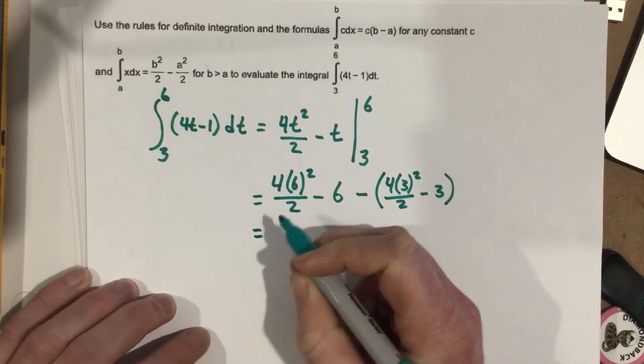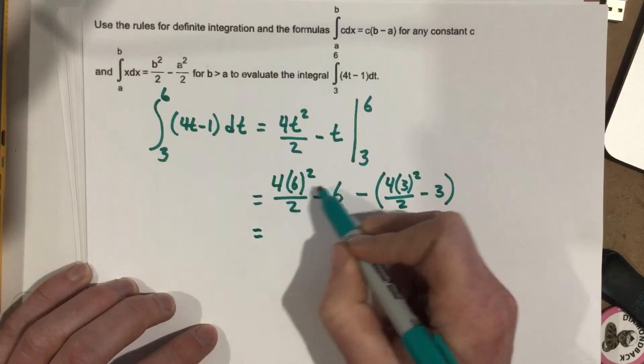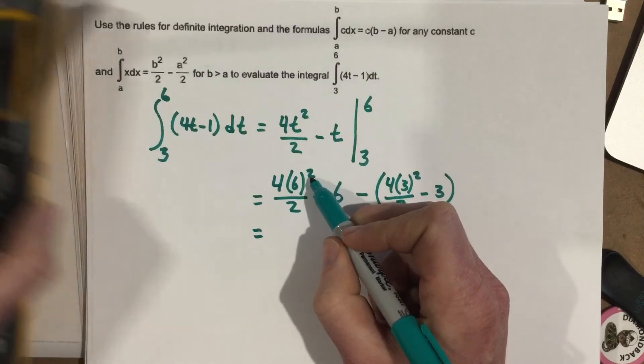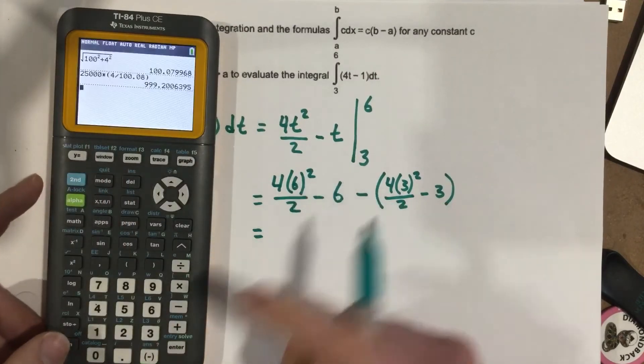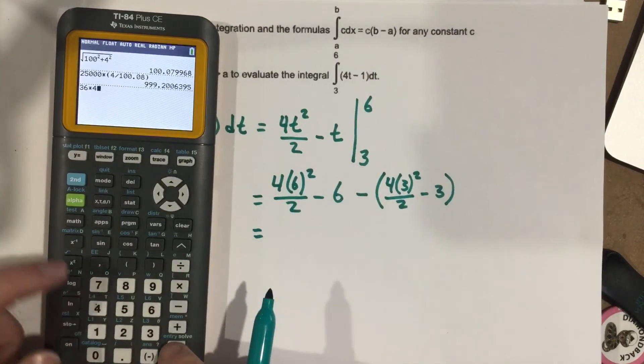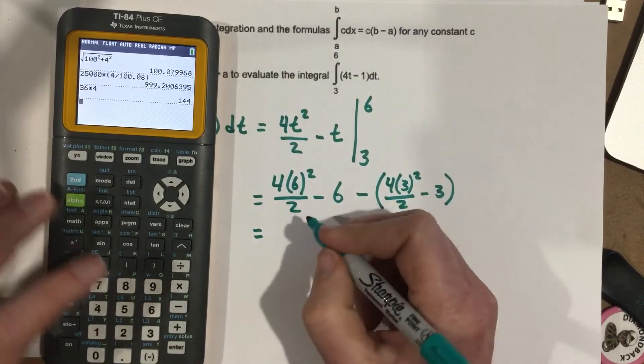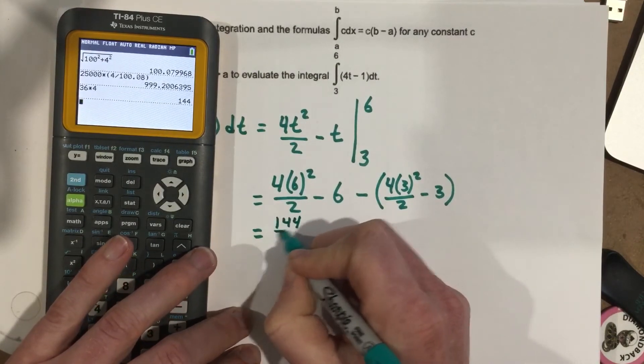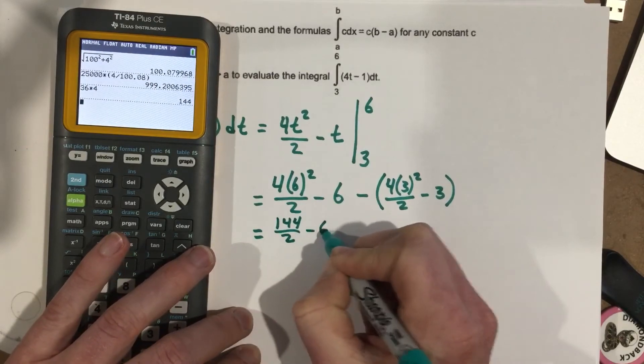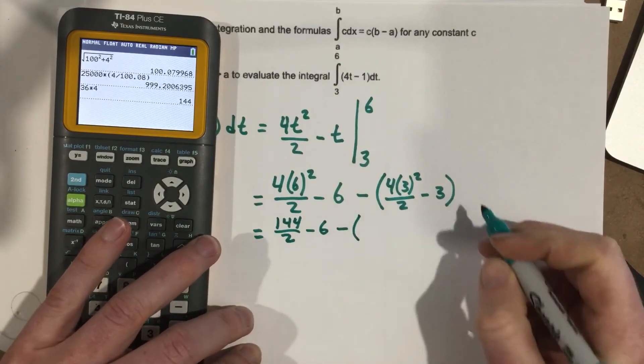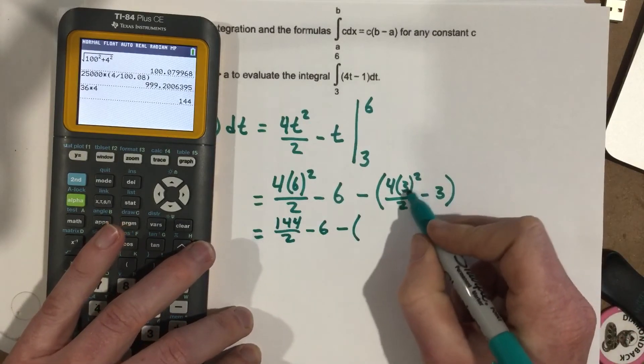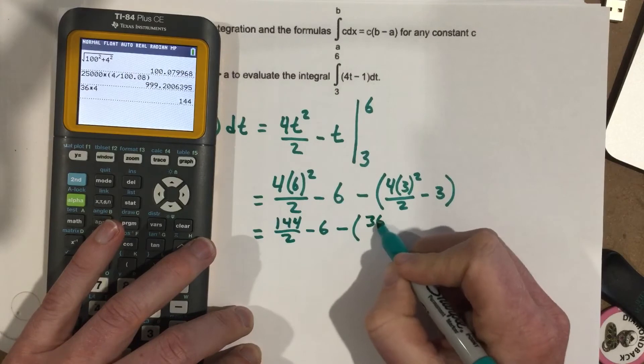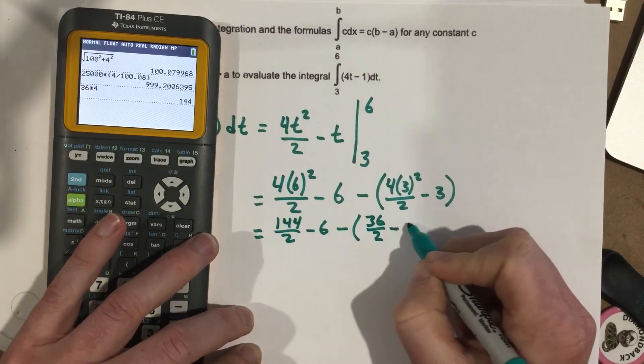Let's go ahead and evaluate this. So 6 squared is 36, 36 times 4 gives you 144. So I have 144 over 2 minus 6 minus, I've got 3 squared is 9, 9 times 4 is 36, so 36 over 2 minus 3.